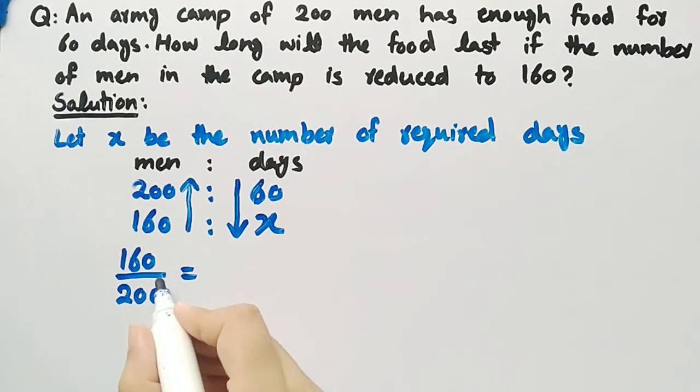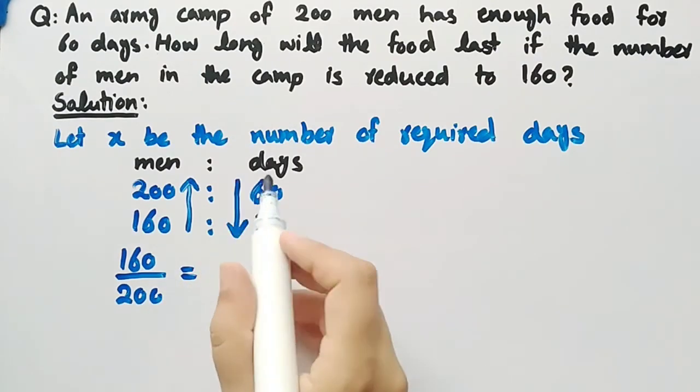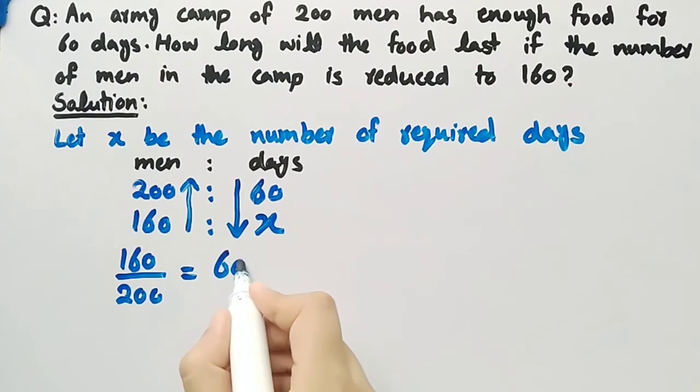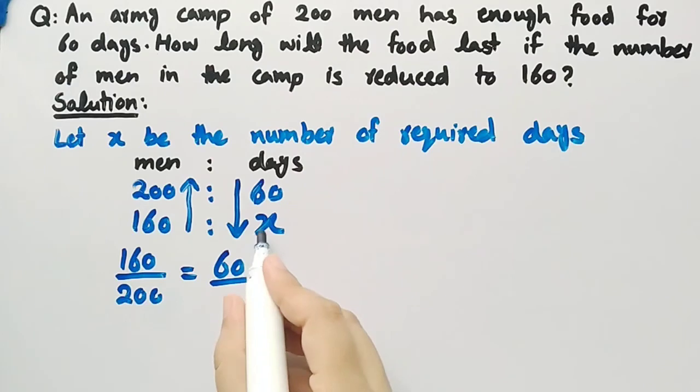Now we will write the quantity in the numerator that is with the tail of arrow, that is 60, divided by the denominator, the quantity that is with the head of arrow, and that is X.